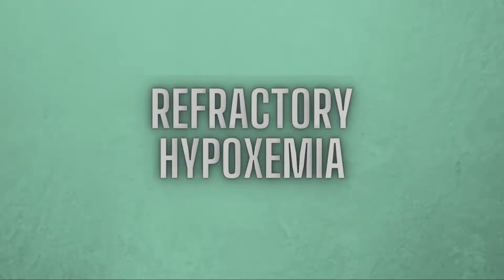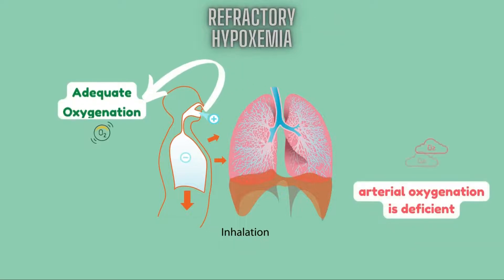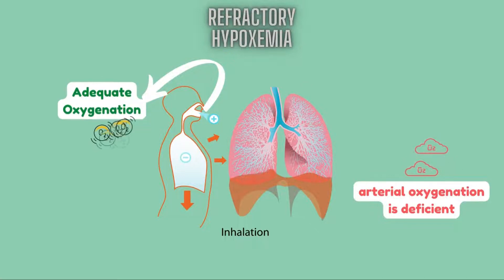There is one more term we need to understand: refractory hypoxemia. There is no clear definition of refractory hypoxemia; however, it is often used when arterial oxygenation is deficient despite optimal levels of inspired oxygen — meaning even when the delivery of oxygen is adequate, there will still be low levels of PaO2 in arterial blood gas.